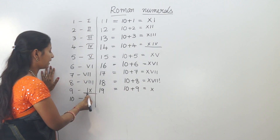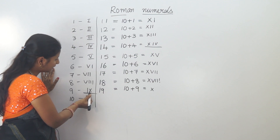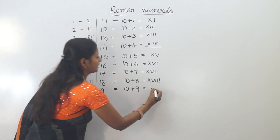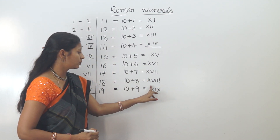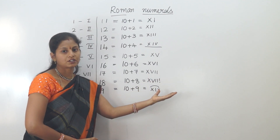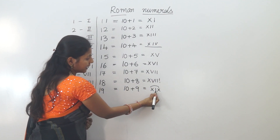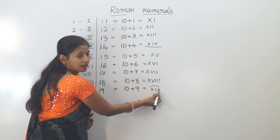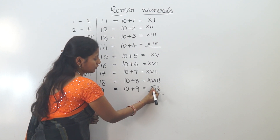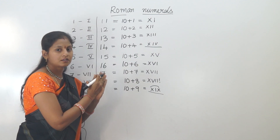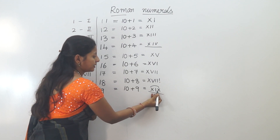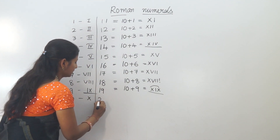For 19, we have 10 plus 9. The rule is: left side subtract, right side add. Nine is written as IX (10 minus 1). So 19 is written as XIX — X for 10, then IX for 9. Ten plus 9 is 19.